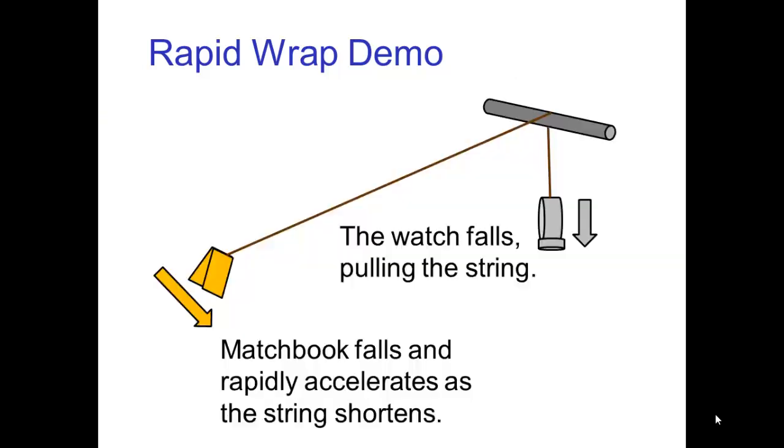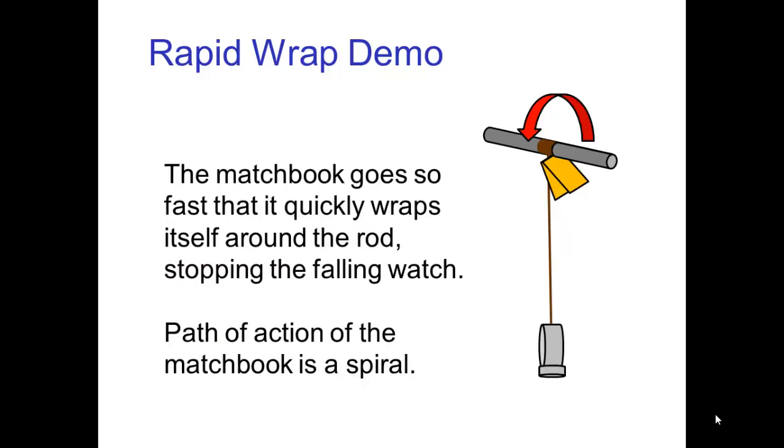The wristwatch falls, pulling the string. The matchbook also falls and rapidly accelerates as the string shortens. The matchbook goes so fast that it quickly wraps itself around the rod, stopping the falling watch. As I mentioned before, the path of action of the matchbook is a spiral.